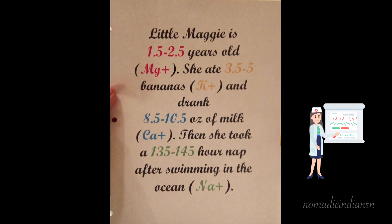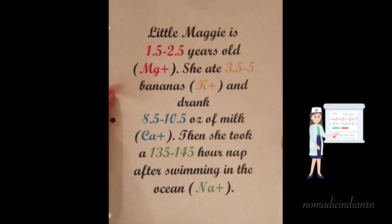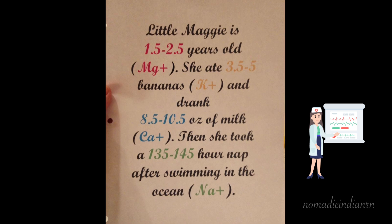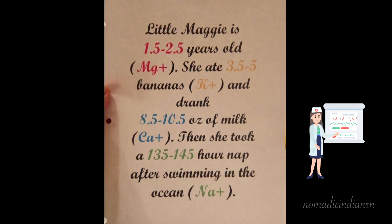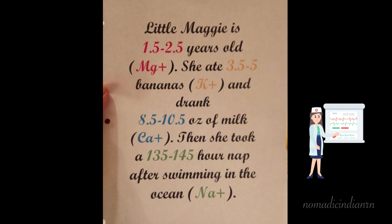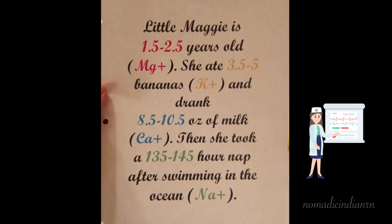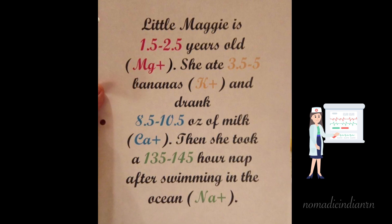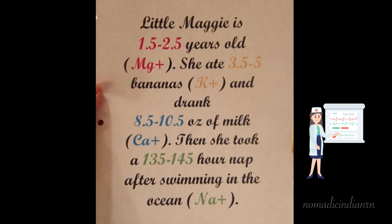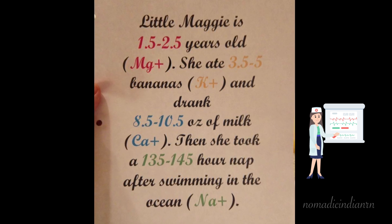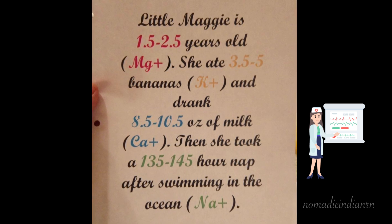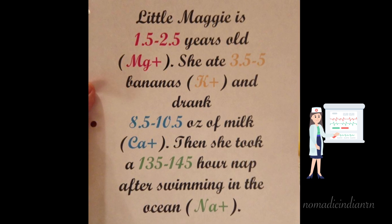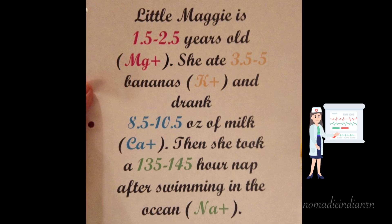Here's the trick to remember the electrolytes: Little Maggie is 1.5 to 2.5 years old. She ate 3.5 to 5 bananas and drank 8.5 to 10.5 ounces of milk. Then she took a 135 to 145 hour nap after swimming in the ocean. Maggie refers to magnesium — normal value 1.5 to 2.5. Bananas refer to potassium, rich in potassium — normal range 3.5 to 5. Milk has calcium — normal range 8.5 to 10.5. Ocean water is salty, meaning sodium — normal range 135 to 145.